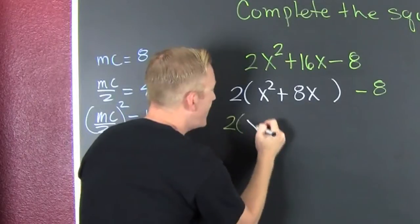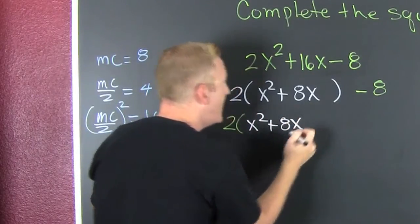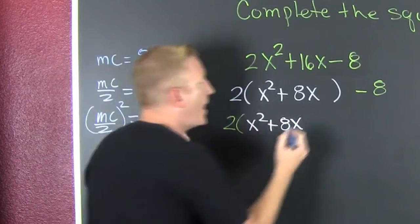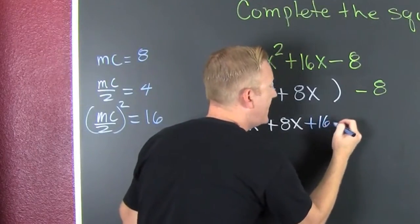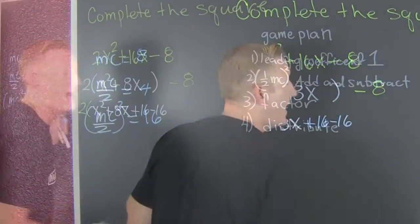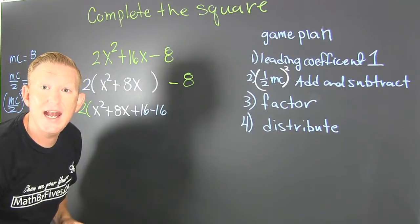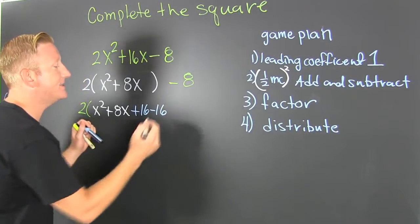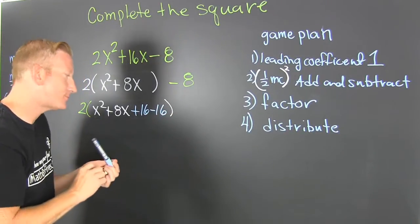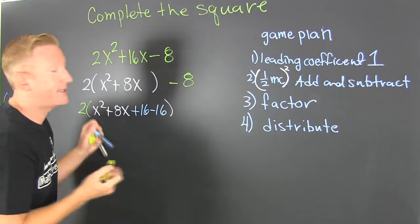So here we have an x squared plus 8x. And then I'm going to add 16 and subtract 16. Effectively doing nothing. You're adding 0. Why?